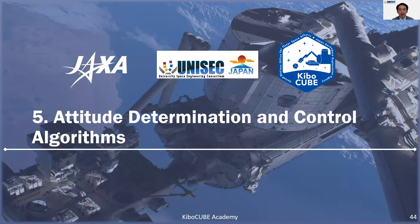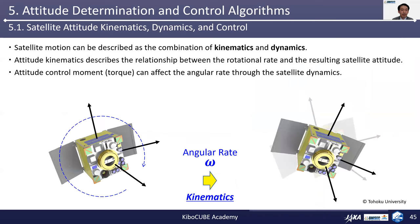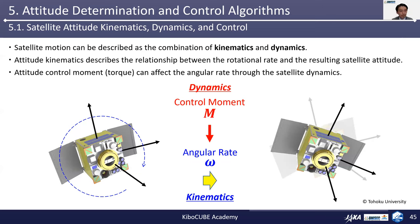Now let's take a close look at the attitude determination and control algorithms from the mathematical point of view. Satellite motion can be described as the combination of kinematics and dynamics. Attitude kinematics describes the relationship between the rotational rate and the resulting satellite attitude. Therefore, measuring the angular velocity is necessary in order to numerically propagate the satellite attitude. In addition to this, an attitude control moment or torque acting on the satellite can affect the angular rate through the satellite dynamics. As a result, the satellite attitude can be integrated with the updated angular velocity information for the next time step.